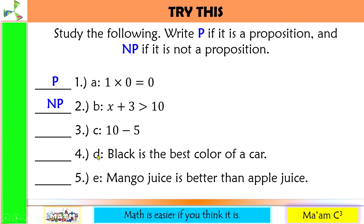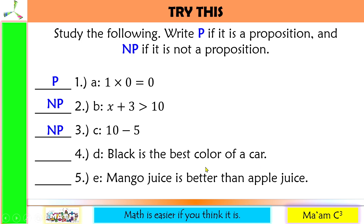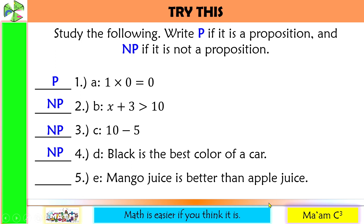Number three: '10 − 5' — this is an incomplete statement; we cannot determine if it is true or false, so this is not a proposition. Number four: 'Black is the best color of a car.' This is a declarative sentence, but beware — this is a matter of opinion. It is relative: black may be the best color for you but not for me, so it is not an objective truth and is not a proposition. Number five: 'Mango juice is better than apple juice.' This is also a declarative sentence; however, it is relative and a matter of taste, not an objective truth, so this is not a proposition.